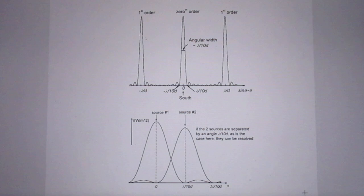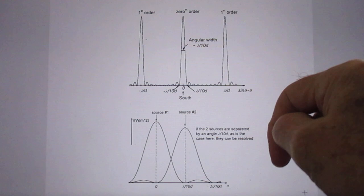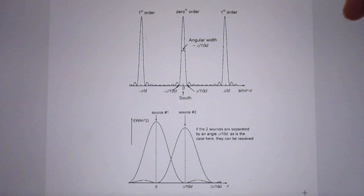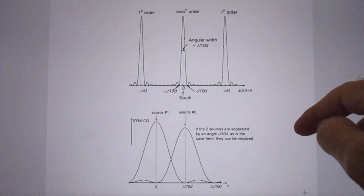At the bottom you see here the separation that two sources would give you the best separation possible. Source 1 and source 2. If source 1 has its zero order here, then source 2, which can just be separated, will be at the angular distance of lambda over 10D, which is here this minimum.